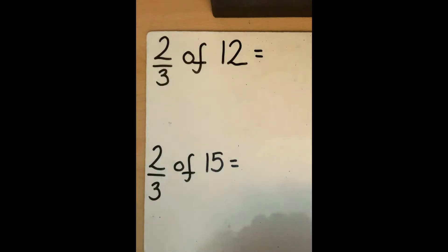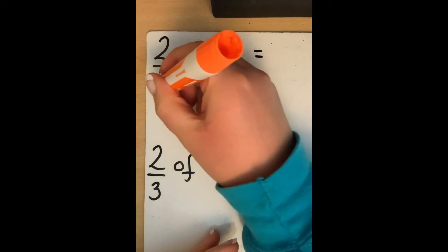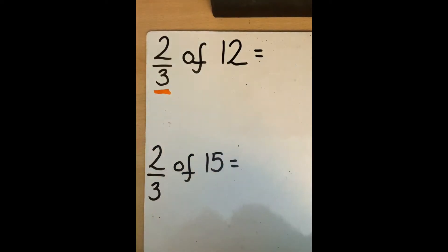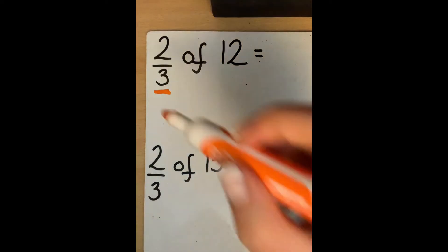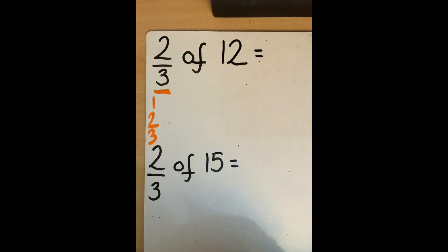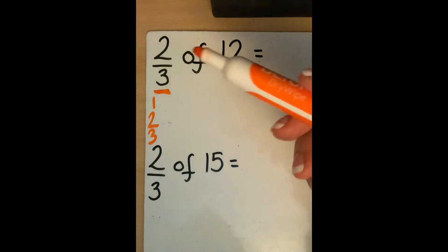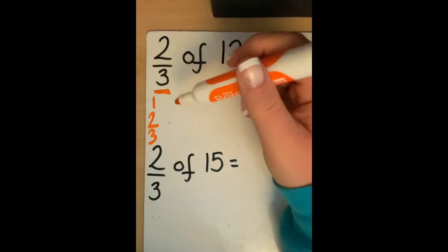So here we can see I need to find 2 thirds of 12. Just like last week, we are going to look at the denominator first. The denominator tells me that I need 3 groups: 1, 2, 3.